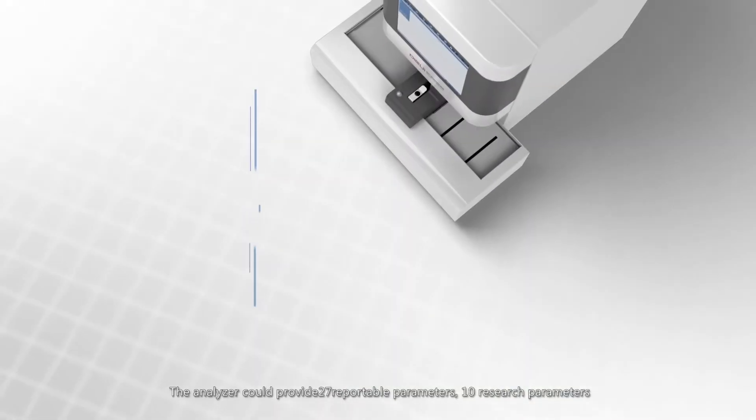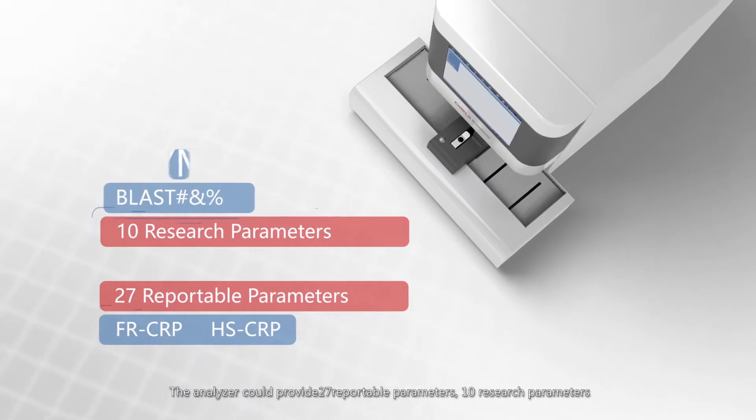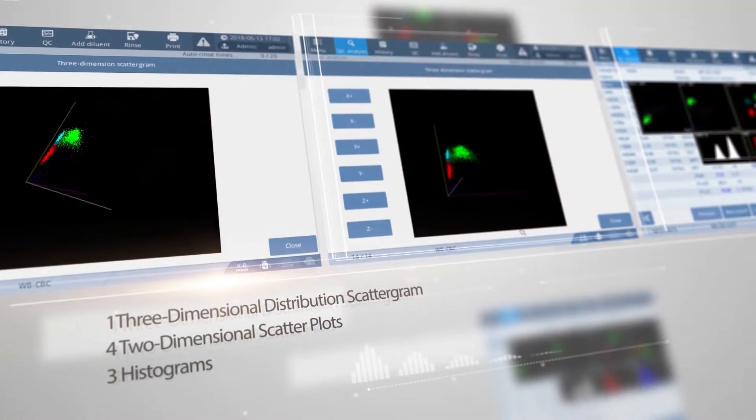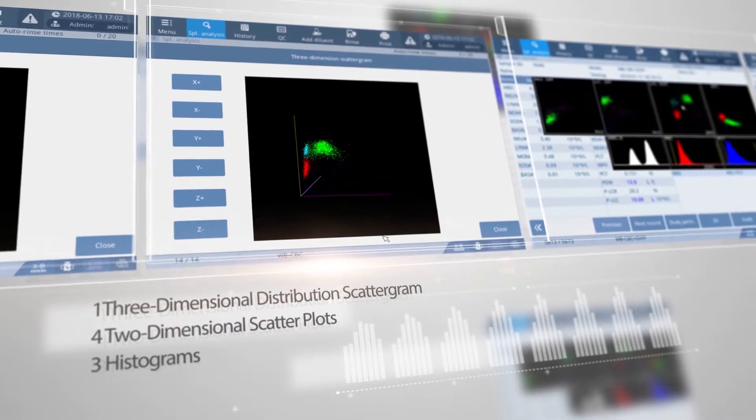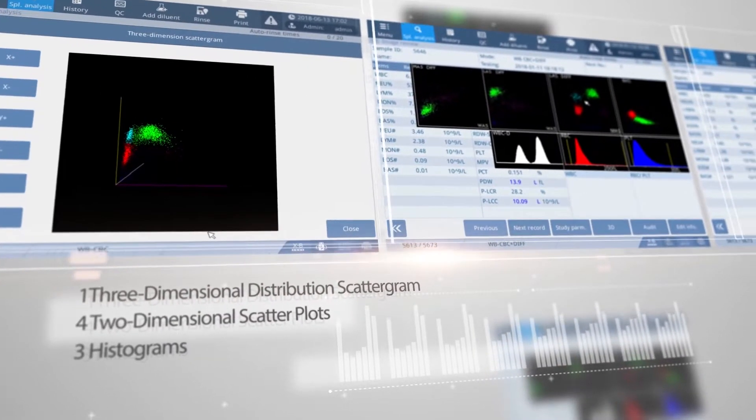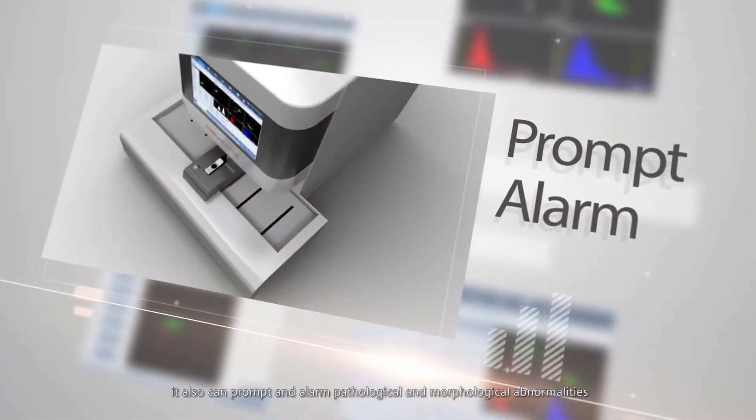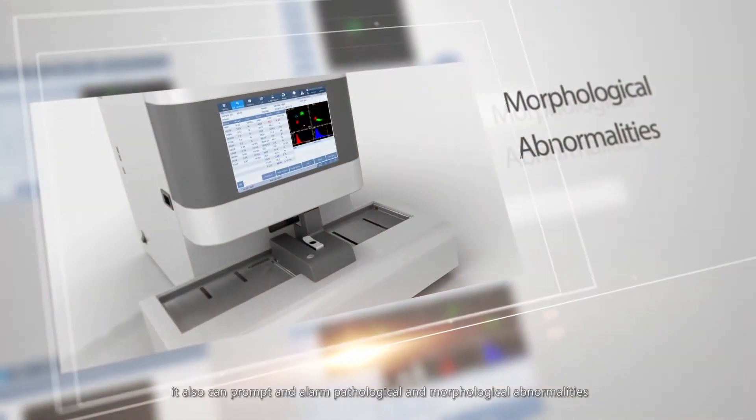The analyzer could provide 27 reportable parameters, 10 research parameters, 1 three-dimensional distribution scattergram, 4 two-dimensional scatter plots, and 3 histograms. It can also prompt an alarm, pathological, and morphological abnormalities.